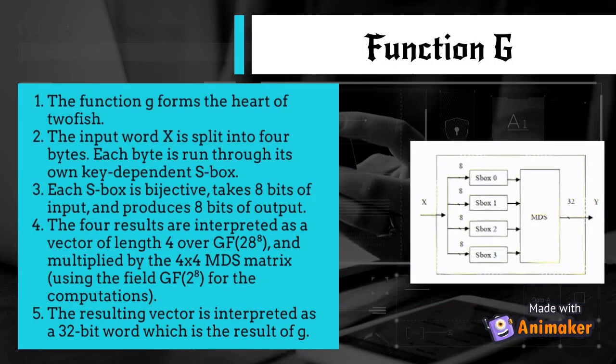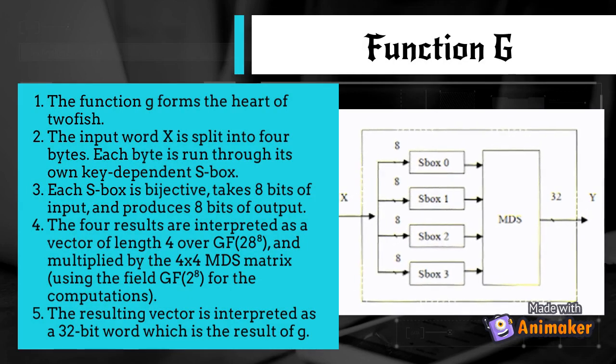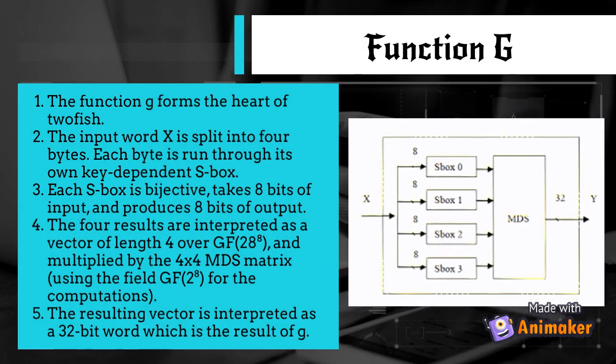The function G forms the heart of Twofish. The input word X is split into 4 bytes. Each byte is run through its own key-dependent S-box. Each S-box is bijective, takes 8 bits of input, and produces 8 bits of output. The four results are interpreted as a vector of length 4 over GF(2^8), and multiplied by the 4×4 MDS matrix using the field GF(2^8) for the computations. The resulting vector is interpreted as a 32-bit word, which is the result of G.